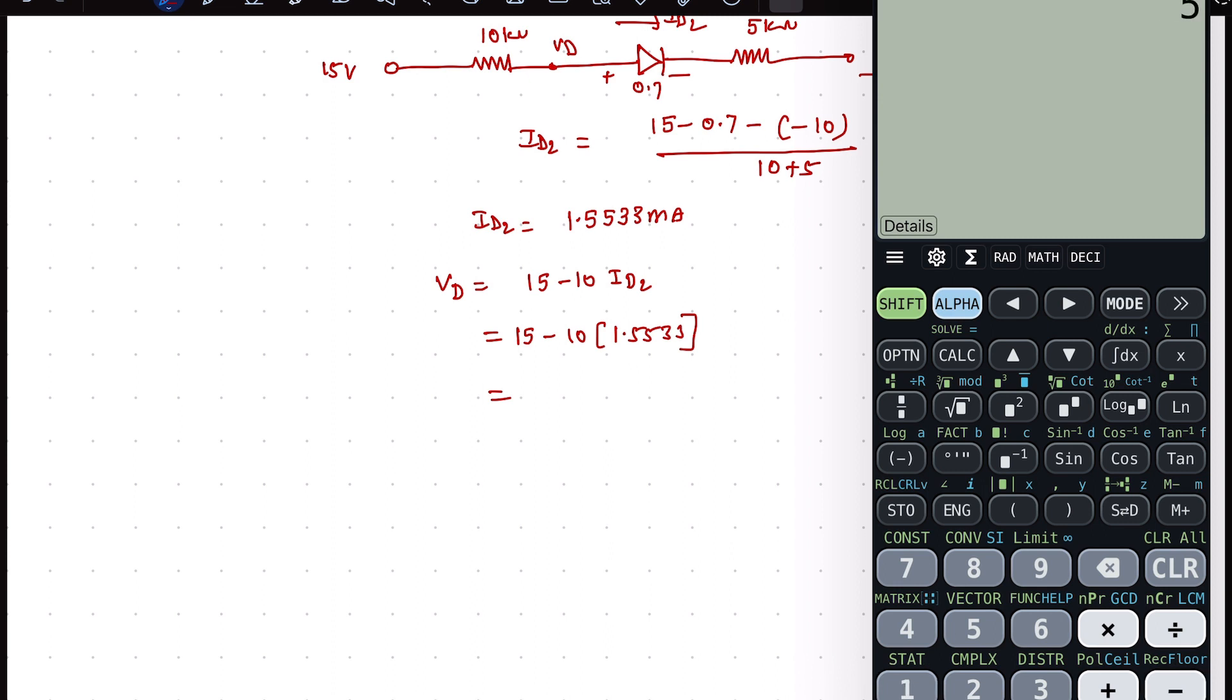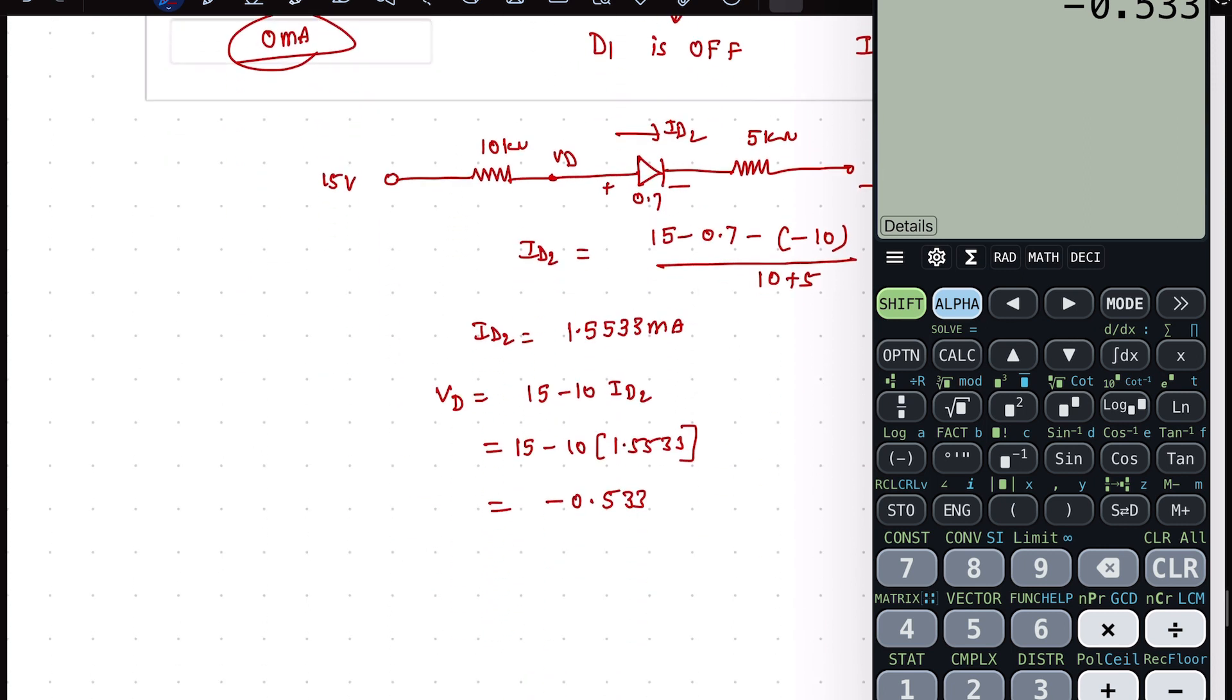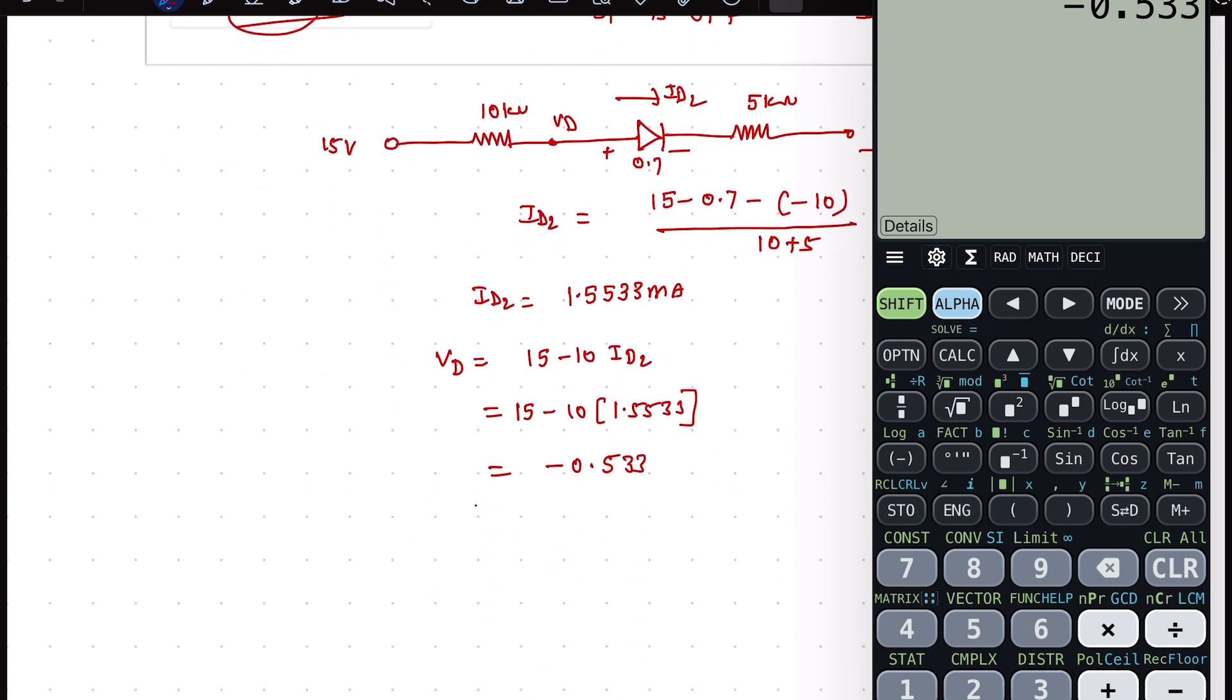Let's use the calculator again: 15 - 10 times 1.5533, which is clearly -0.533 volts. So clearly the voltage drop across the diode VD1 is negative, -0.533V.